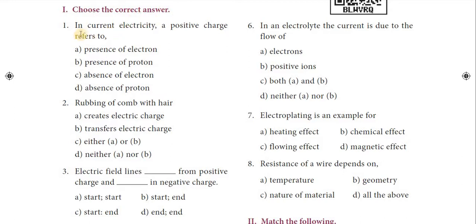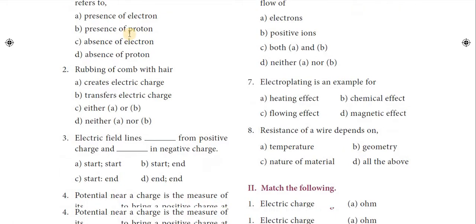First question: in current electricity, a positive charge refers to — Option C — absence of electrons. So absence of electrons is the only positive charge present in the electrical circuit.